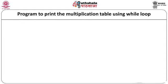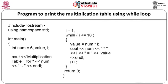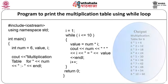A while loop program prints a multiplication table. Variables integer num = 6, value, and i are declared. i is initialized to 1; while (i <= 10): value = num * i; display 'num * i = value'; i++. When compiled and executed, it displays: 6*1=6, 6*2=12, and so on up to 6*10=60.